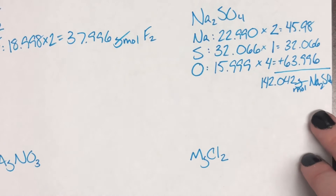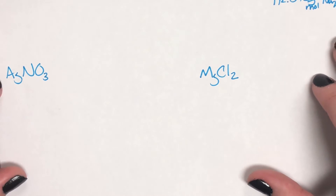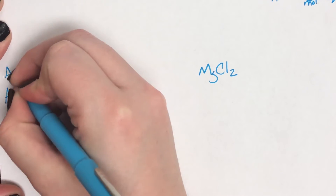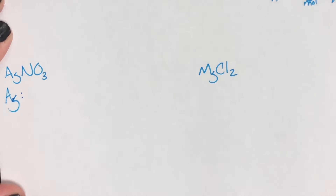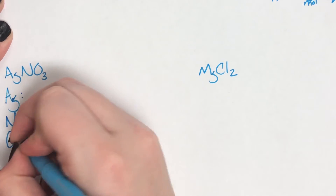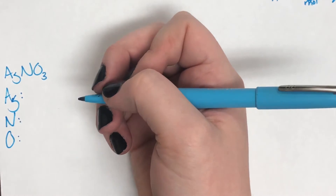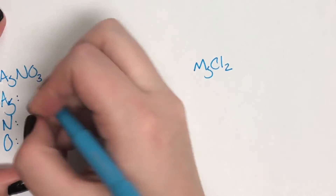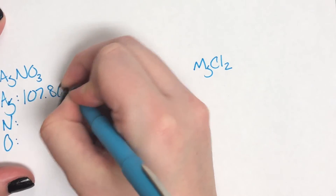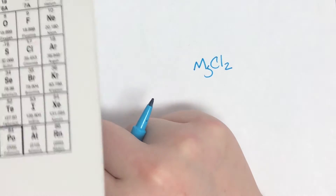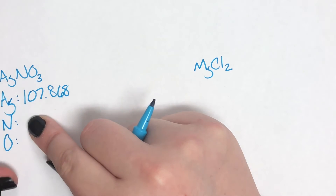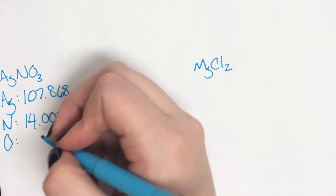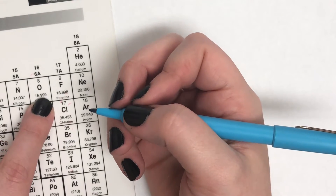Last examples. We have silver nitrate and magnesium chloride. Silver nitrate — we have Ag: that 'g' is lowercase so it attaches to A, making it silver. Then we have nitrogen and oxygen. Silver's mass is 107.868. Nitrogen's mass is 14.007. And as you've probably accidentally memorized by now, oxygen's mass is 15.999.